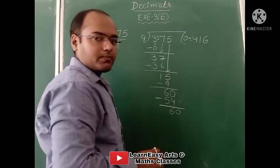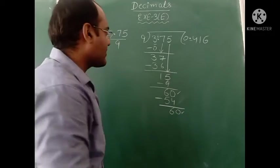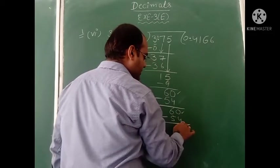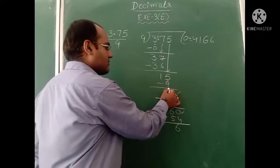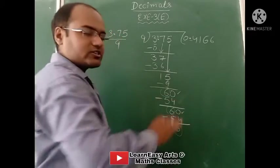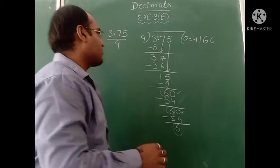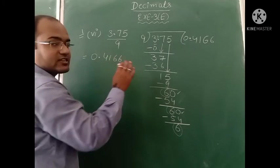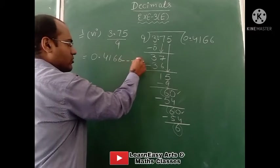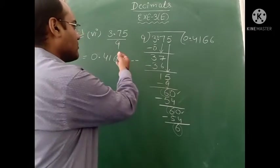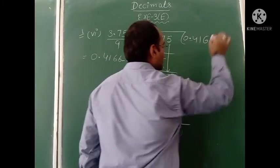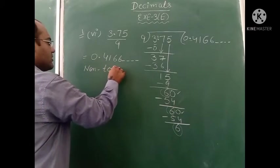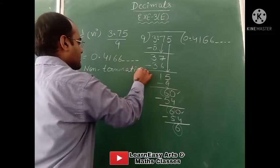Here what you will observe: the remainder is coming the same again and again. Here remainder was 6, here also remainder was 6, and now again we got the same remainder. That means this division will not get over. Finally, on dividing these two we are getting answer 0.4166 and so on — this answer is not over. Such numbers are known as non-terminating decimal.